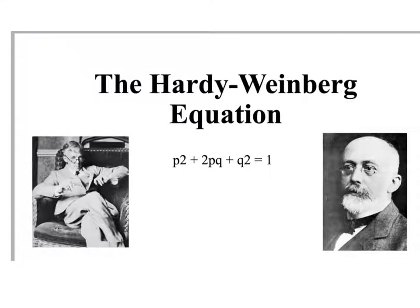The Hardy-Weinberg equation is a mathematical model that was developed by G.H. Hardy, a British mathematician, and Wilhelm Weinberg, a German physician. They both lived and worked in the late 1800s and early 1900s. They didn't work together, but they independently converged on the same ideas to describe what we now call the Hardy-Weinberg equilibrium principle, used in the study of population genetics.